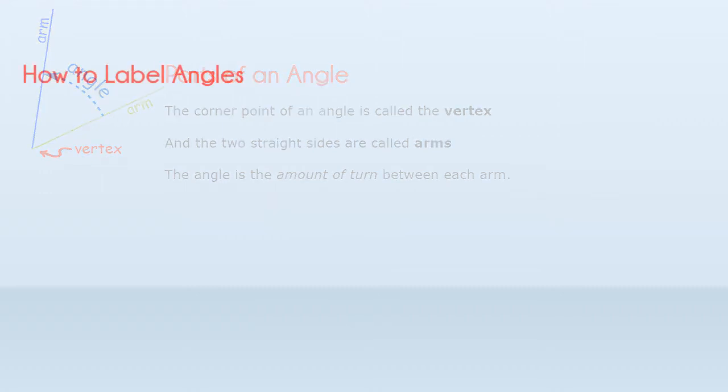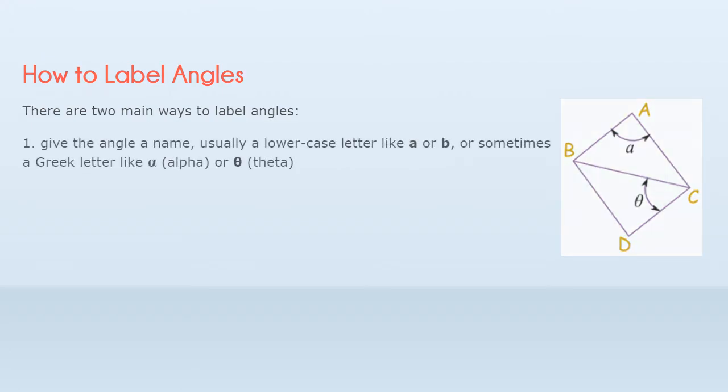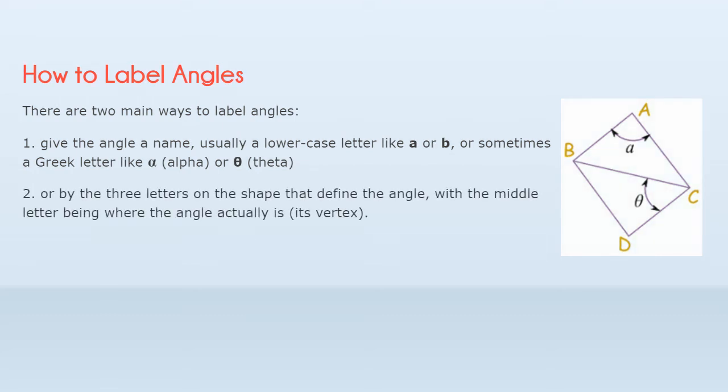How to Label Angles. There are two main ways to label angles. Give the angle a name, usually a lowercase letter like A or B, or sometimes a Greek letter like alpha or theta. Or by the three letters on the shape that define the angle, with the middle letter being where the angle actually is, its vertex. Example, angle A is BAC, and angle theta is BCD.